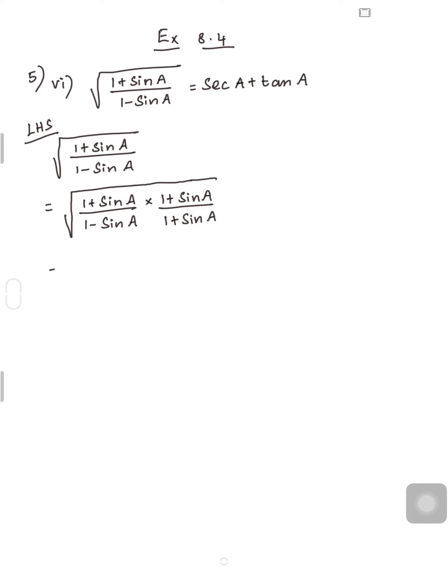In the numerator you have (1 + sinA)(1 + sinA), which can be written as (1 + sinA) whole squared. In the denominator, (1 - sinA)(1 + sinA) is in the form of (A - B)(A + B), which can be written as A² - B².